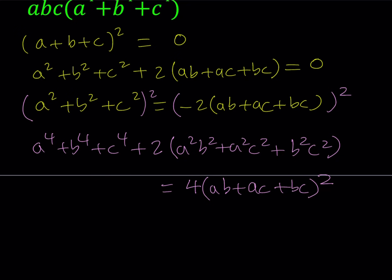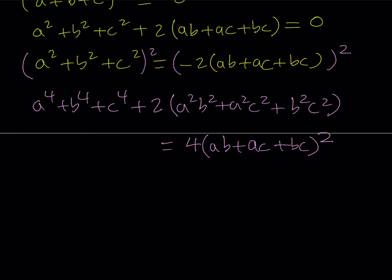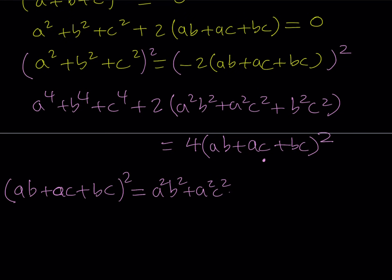So I squared both sides, and I got something that contains the sum of 4th powers. But I need to work on this a little bit more. I've got to work on the expression ab plus ac plus bc, quantity squared. So let's go ahead and expand it separately and see what that looks like. It's kind of like the same as a plus b plus c squared, but the variables are different. So you get a squared b squared plus a squared c squared plus b squared c squared.